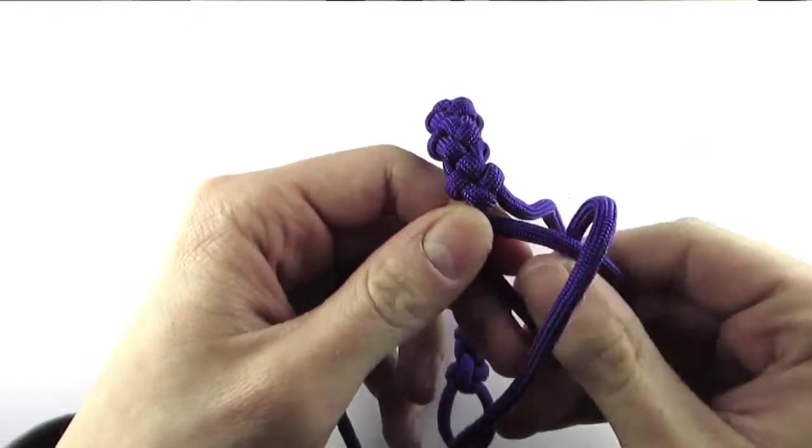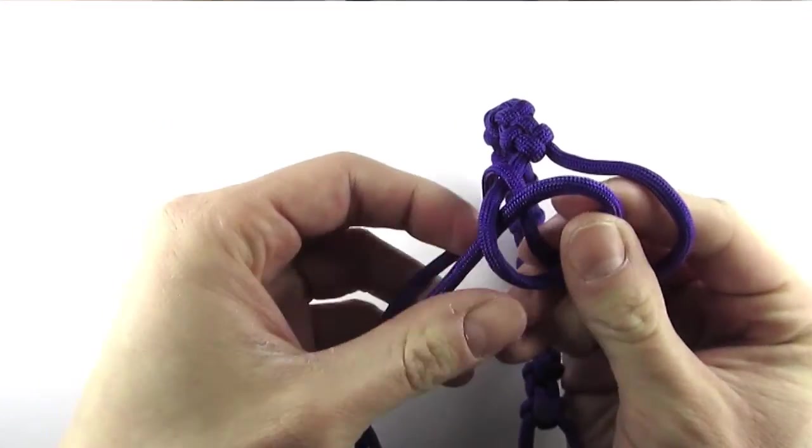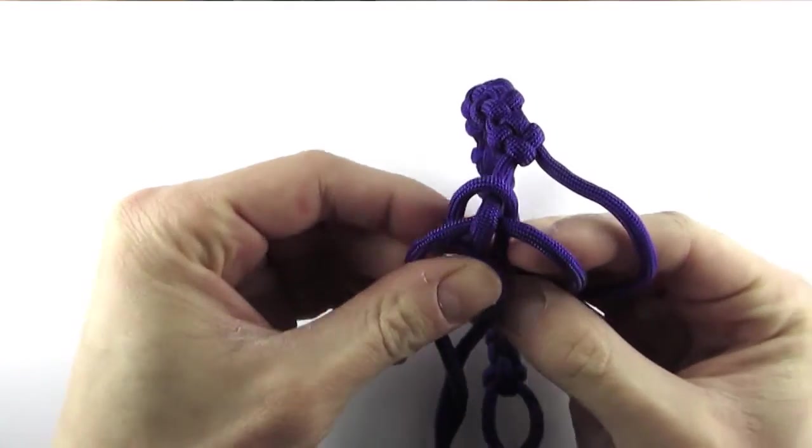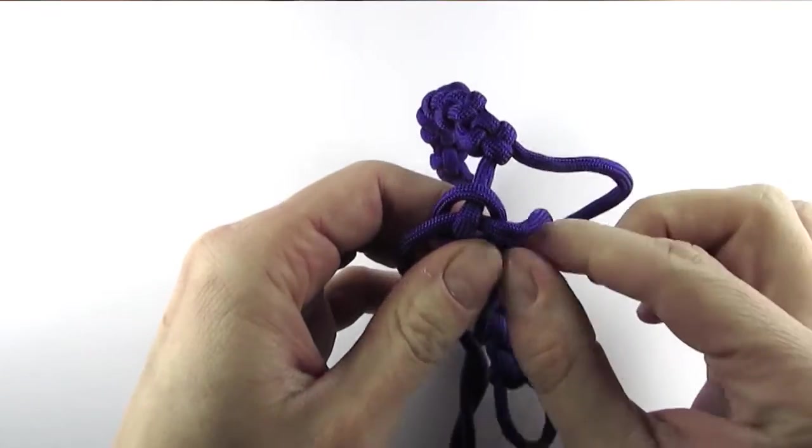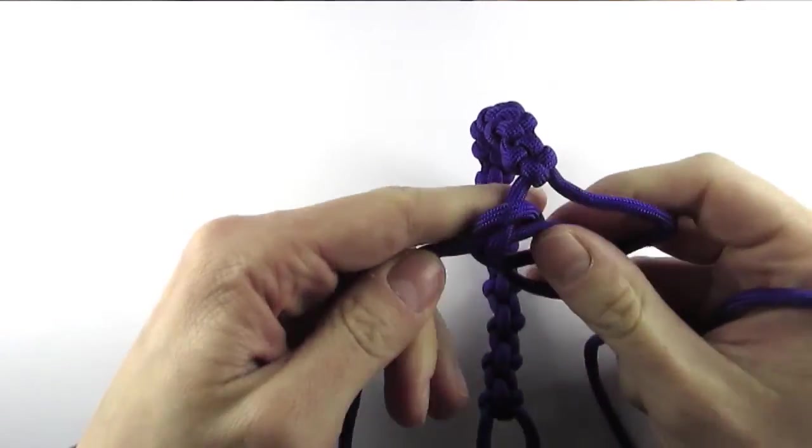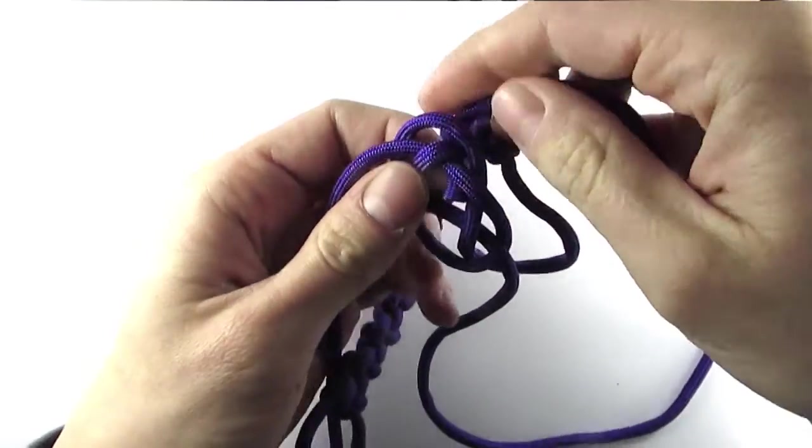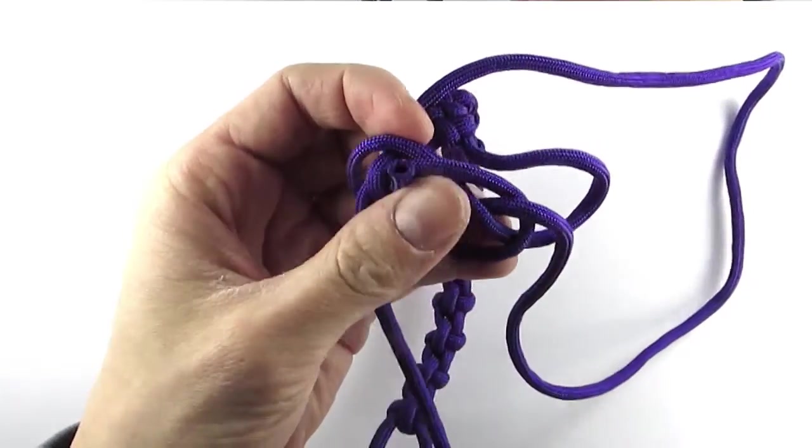If you're not familiar with the lanyard knot, I have a link in the description below which you can use to learn the knot. And this is how it is tied, using a turk's head, and then feeding the ends through the loop.